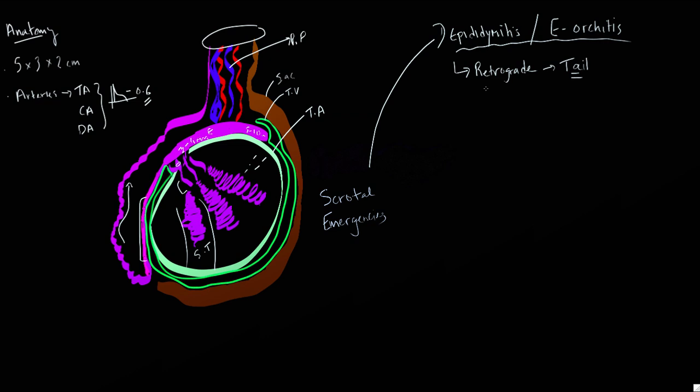The bugs that cause this in men below the age of 35 who are sexually active is usually sexually transmitted infection. In that subset of group, Neisseria and Chlamydia are common culprits. In older patients, typically above the age of 35 who are not sexually active, E. coli is commonly seen. Concomitant inflammation involvement of the testicle, which is epididymal orchitis, can be seen in 40 to 80%. This can be focal or diffuse.